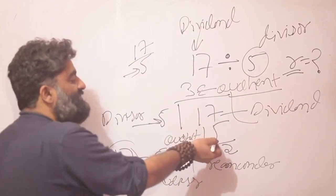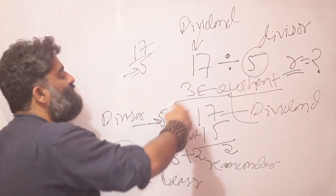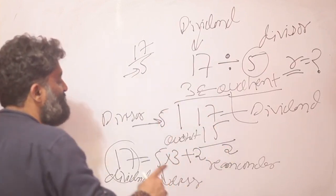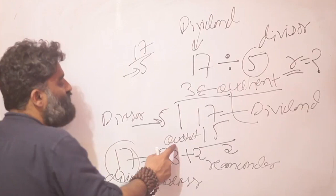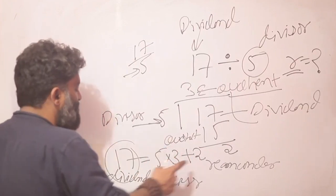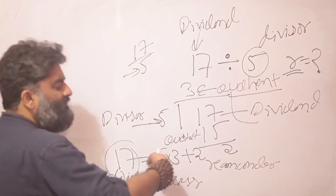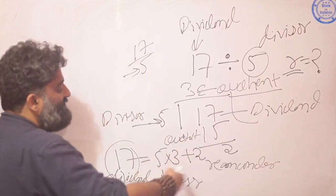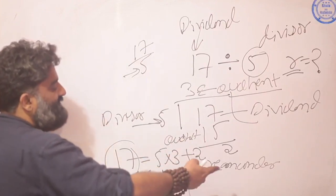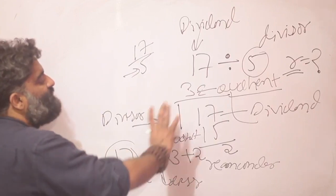So all of us know this, we are just slowing down and trying to build the connection between all the terms. Divisor into the quotient plus the remainder gives you the original number which you are calling the dividend. 5 minutes later we will forget all of these terms and straight away just start writing this, but this is the fundamental process involved.